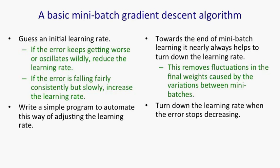So a good time to turn down the learning rate is when the error stops decreasing consistently. And a good criterion for saying the error stopped decreasing is to use the error on a separate validation set. That is, it's a bunch of examples that you are not using for training and also they're not going to be used for your final test.